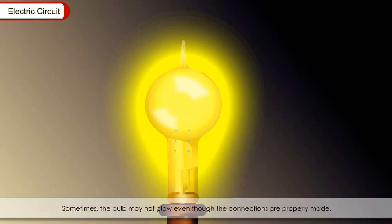Sometimes the bulb may not glow even though the connections are properly made. This may be because the flow of electricity is incomplete as the filament in the bulb is broken. A bulb with broken filament is said to be fused.